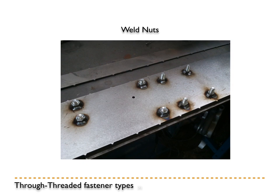Here are T-nuts that have been welded to sheet metal — called weld nuts. They are made similarly to regular nuts except they would have no plating such as chrome or zinc plating, because that would affect the weld. They might also be made out of a slightly different type of steel intended for welding.